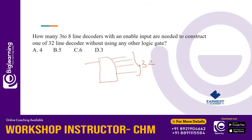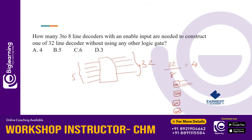We have 5 input lines. We are constructing a 3-to-8 decoder to build a 5-to-32 decoder. We need 32 divided by 8 equals 4 decoders. So the answer is 4 decoders — decoder 1, 2, 3, and 4 — each being a 3-to-8 decoder, giving us a total of 32 outputs.